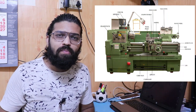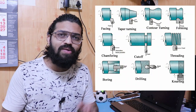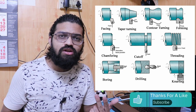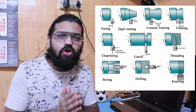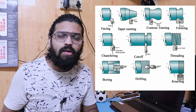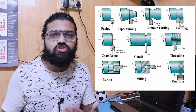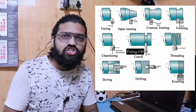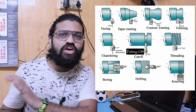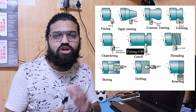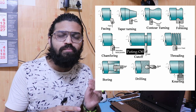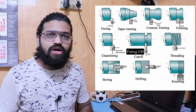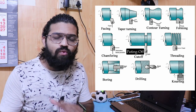Now let's talk about the different types of operations that can be performed on the lathe machine. We can perform facing, drilling, reaming, boring, counter-boring, knurling, and parting-off operations. The parting-off operation can also be called a grooving operation. We can also carry out polishing operations by wrapping a polishing paper around the rotating workpiece.